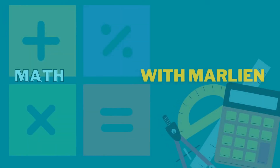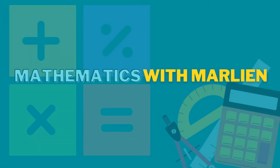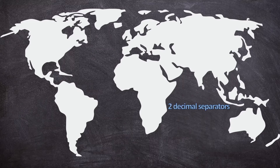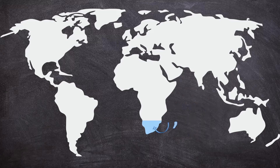Hello everyone and welcome to Mathematics with Marlene. In this video we'll be dividing decimal numbers by whole numbers. Just a reminder: all around the world we use two different decimal separators — a decimal comma and a decimal point. Because I was born and raised in South Africa I use a decimal comma, but it doesn't change any of the rules or steps. The only difference is I use a comma where you may use a point. Now let's get started.